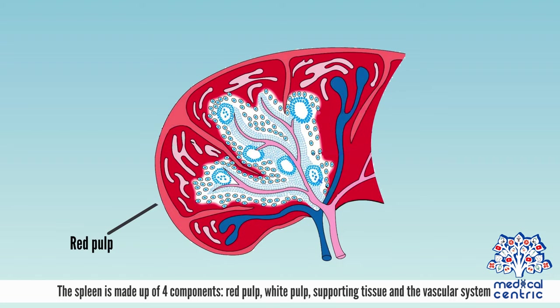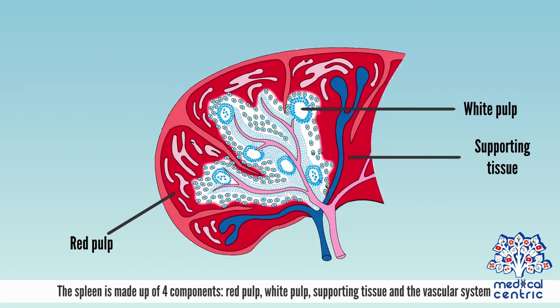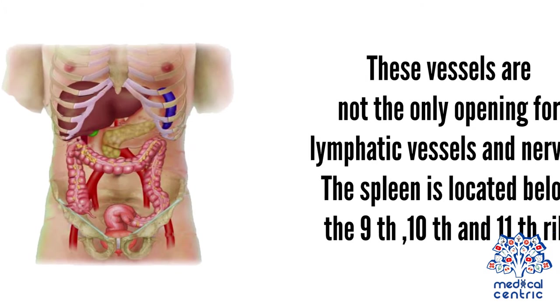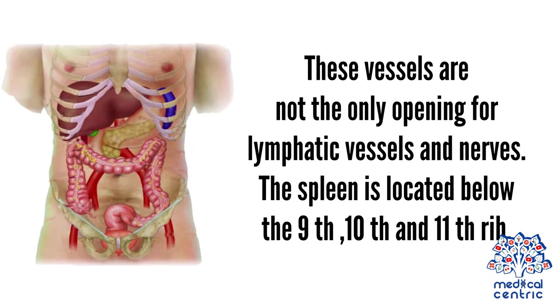The spleen is made up of four components: red pulp, white pulp, supporting tissue, and the vascular system. The point of insertion of the splenic artery and the splenic vein is the hilum. These vessels are not the only opening for lymphatic vessels and nerves. The spleen is located below the 9th, 10th, and 11th rib.